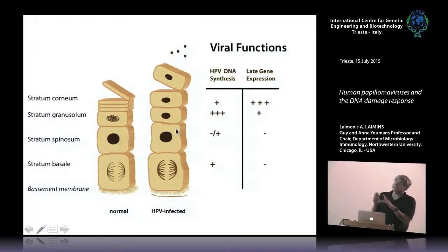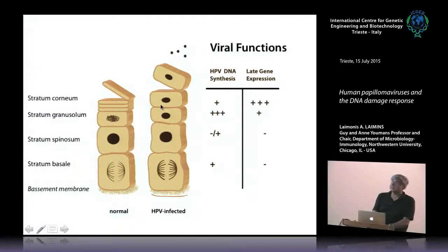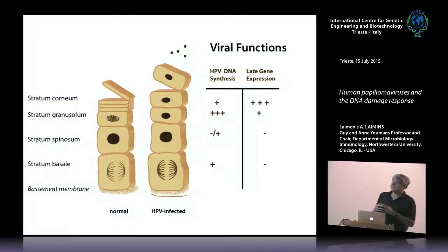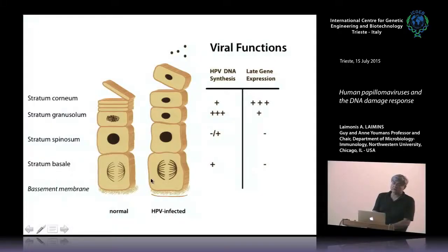The major change HPV induces is it blocks the normal cell cycle exit. Instead of exiting the cell cycle, the cells become locked in G1 and the nuclei are no longer degraded. When they reach the very top of the epithelium, viral proteins push the cells into S phase and G2, where the viral DNA is replicated using cellular enzymes, followed by production and release of progeny virions. Cells in the basal layer can remain infected and persist in viral progeny synthesis for extended periods. These are also the cells where virally induced carcinomas originate.